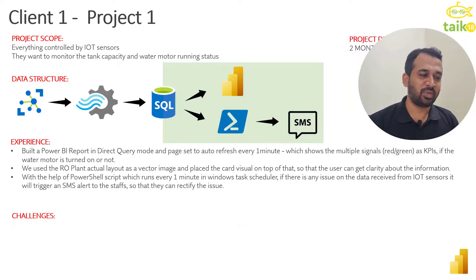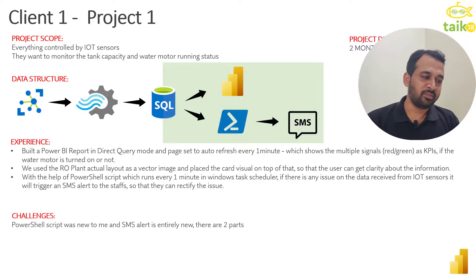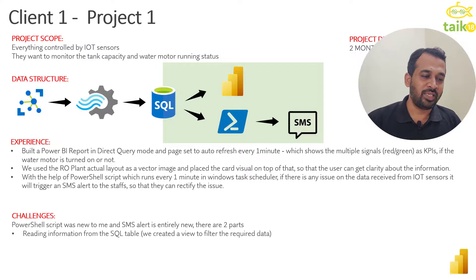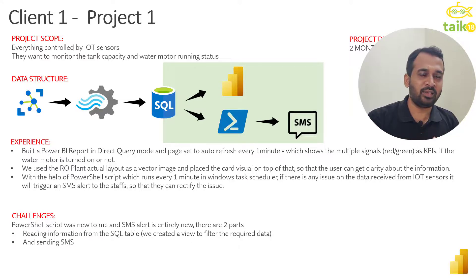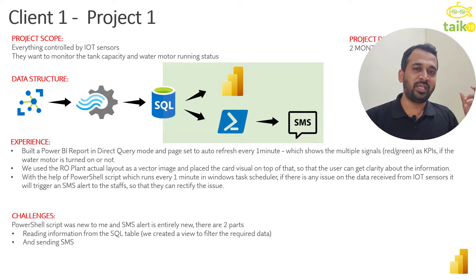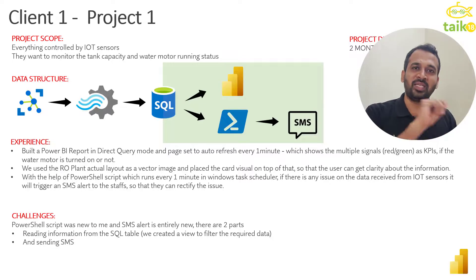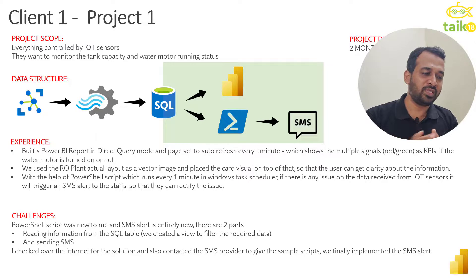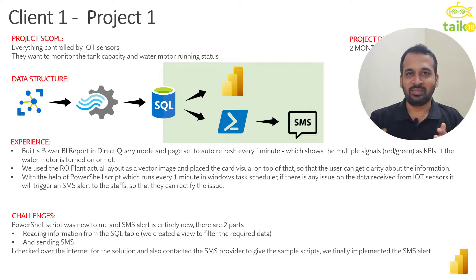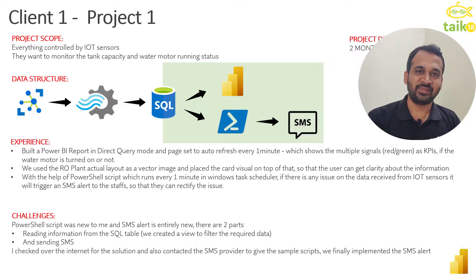The challenges we faced were that PowerShell scripting was new to me, and sending SMS alerts through PowerShell was entirely new. There were two parts: reading data from the SQL Server view with filtered required data, and sending SMS. We obtained an API from an SMS provider, passed the message and mobile numbers stored in the database, called those numbers from SQL Server, and passed the information from the view through the API to send SMS alerts. I researched online and contacted the SMS provider for a sample script, and we successfully implemented it through communication with our community and the SMS provider. This project was completed successfully within two months.